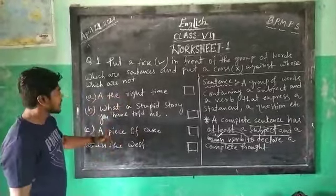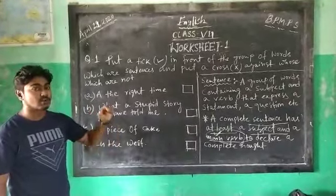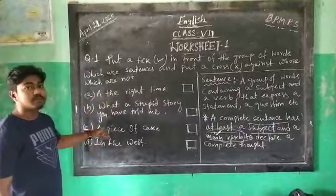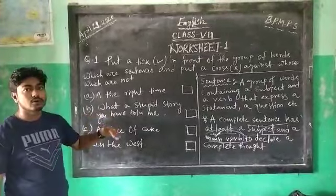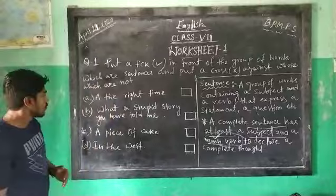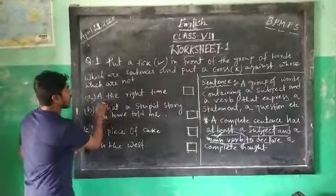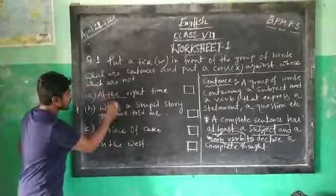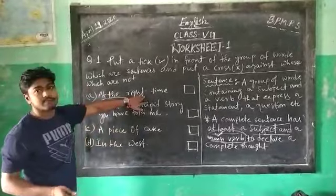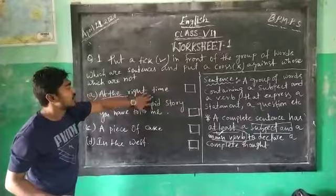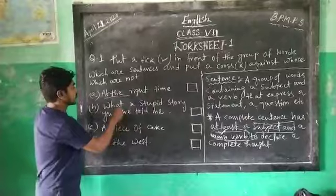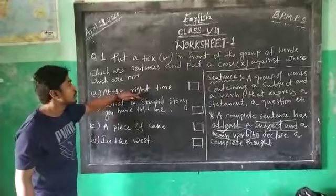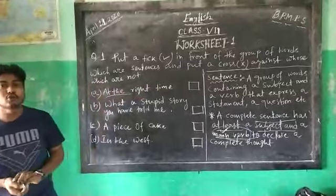I have some examples that are given in your worksheet. Let's try to solve them. I will discuss four questions and then you will complete the rest at home. So let's check. Here you can see the first example: 'At the right time.' Here there is no subject, and these are only some words with no main verb. So this is not a sentence.